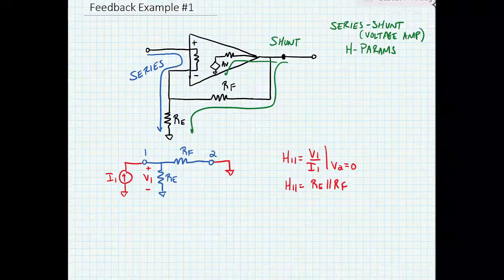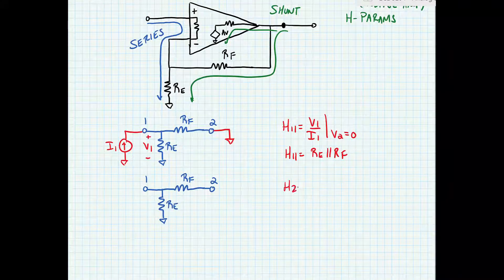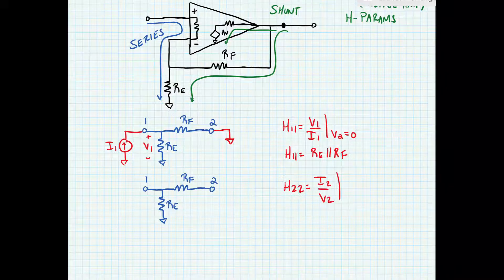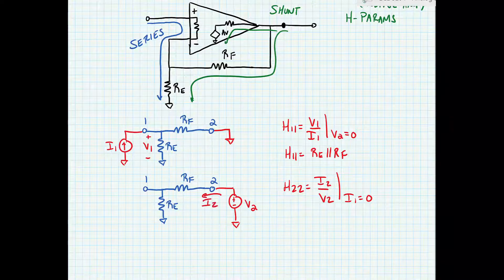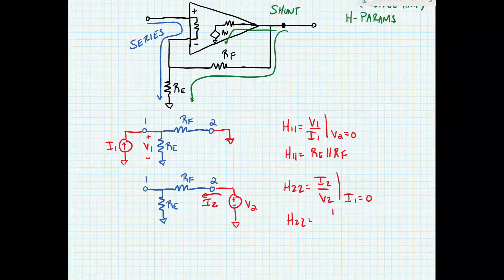Next, H22 is equal to I2 over V2 when I1 is equal to 0. So here we're going to leave port 1 open, put a test voltage source in, and measure the current I2 flowing into the port. We can see that RF and RE are in series, so H22 is equal to 1 divided by RF plus RE.